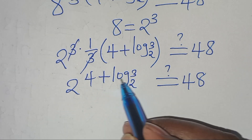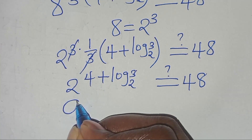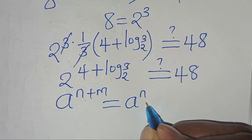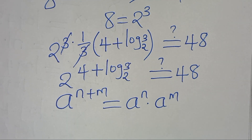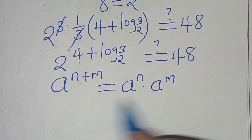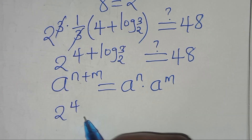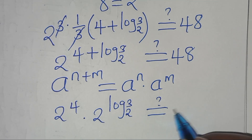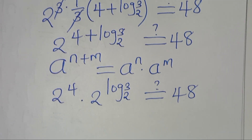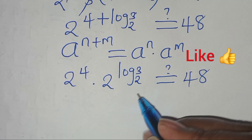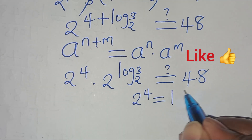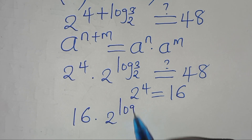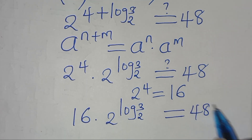Now 2^(4 + log₂(3)) is in the form a^(n+m), which equals a^n × a^m. Applying this exponent property, we get 2⁴ × 2^(log₂(3)), which should equal 48. Since 2⁴ equals 16, we have 16 × 2^(log₂(3)) = 48.